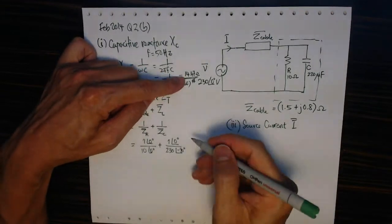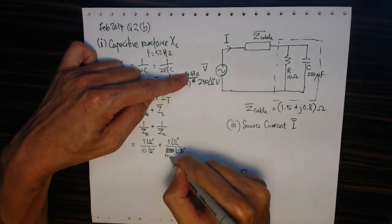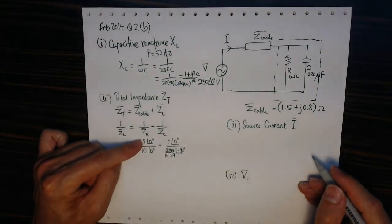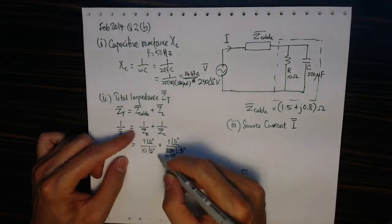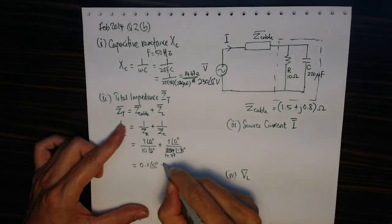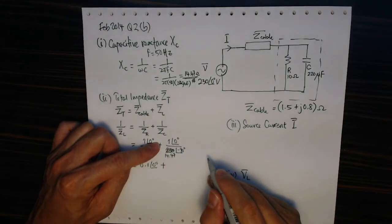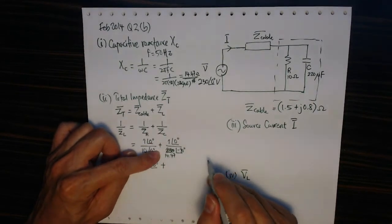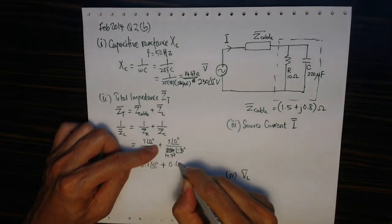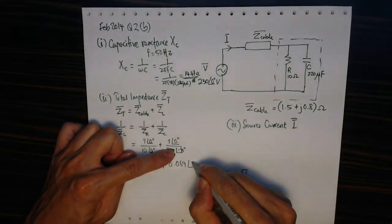This time Xc is 14.47 but it's with a 90 degree, so minus 90 degrees. This can be a complex number division, so this gives me 0.1 at the angle of zero plus 1 upon 14.47 that gives me 0.069 at the angle of 0 degree minus minus 90, so it becomes positive 90.